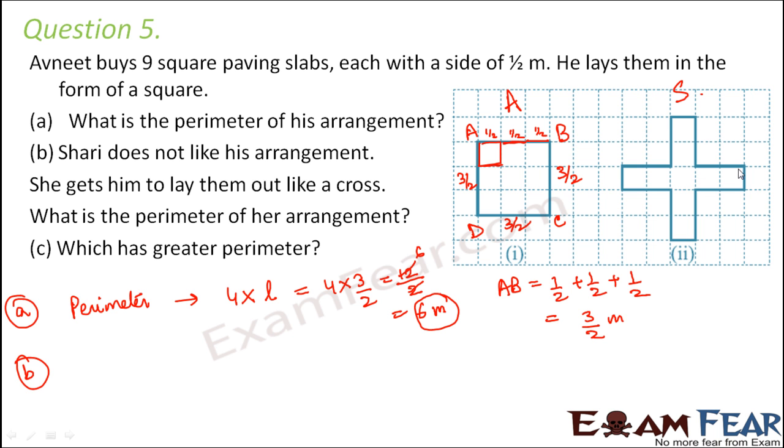So how would you find out the perimeter of this cross? For that again you would add up all the sides of this cross. Now this side of the cross is half meter because each side of the square is half meter. This is half. This is also half. That means all together this length is 1.